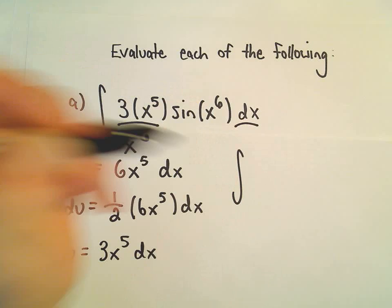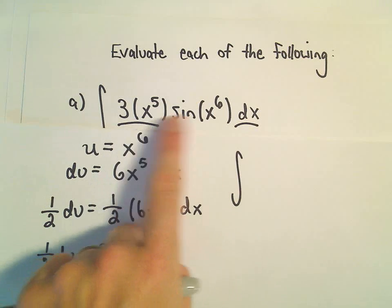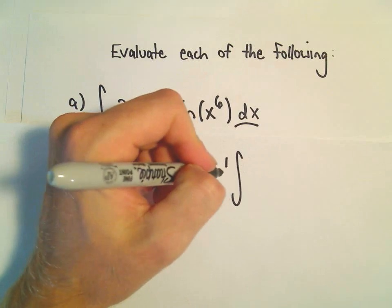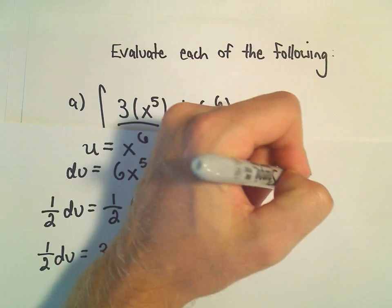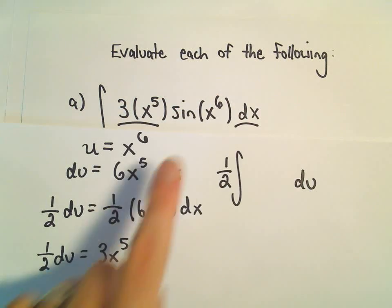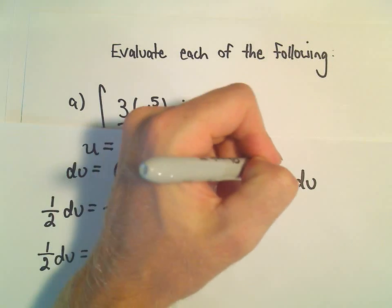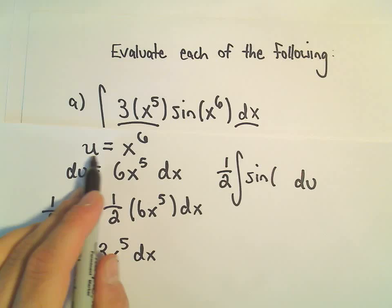Okay, so now we can sort of just go and relabel all of this stuff. Our 3x to the 5th dx, that's just going to be our 1 half du. I'm going to pull the 1 half out front, and there's our du. And then we would have sine left over, and instead of x to the 6th, that's what we're replacing with u.